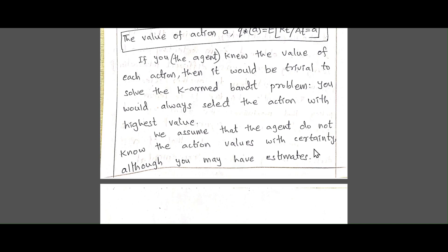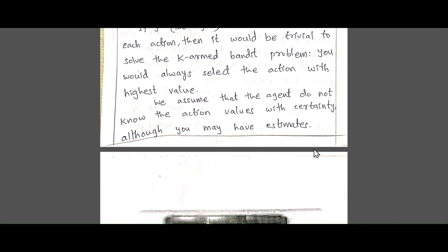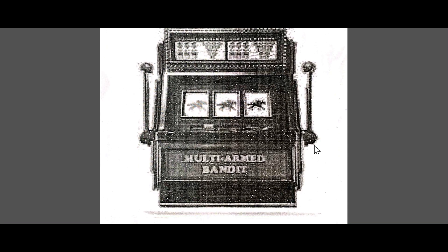If you imagine that you are the agent and you know the value of each action, then it would be trivial for you to choose the arms and get the highest rewards or take actions that lead to higher rewards. However, we assume that the agent does not know the action values with certainty, so the agent should estimate and make a plan to get higher rewards.